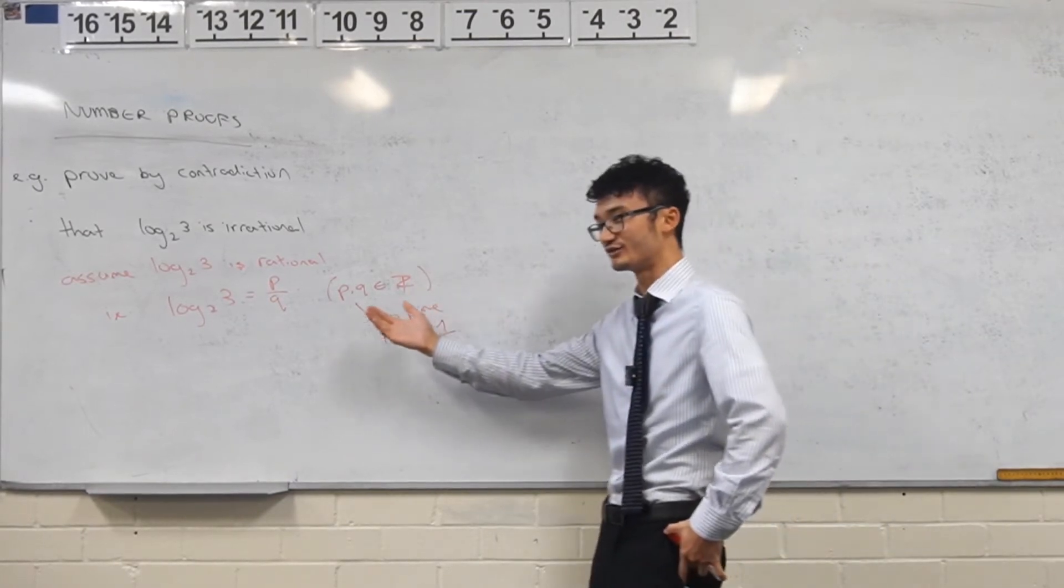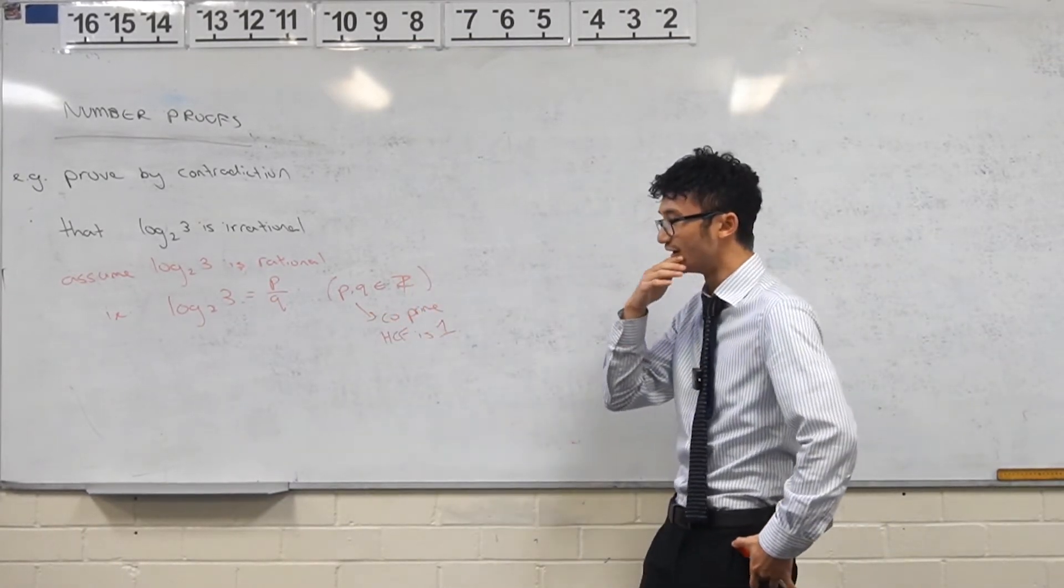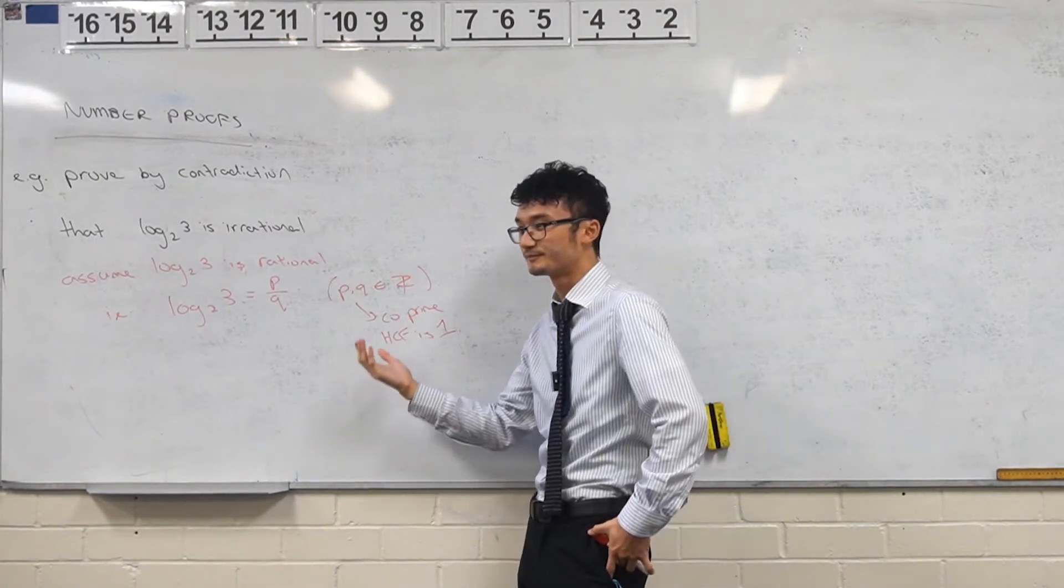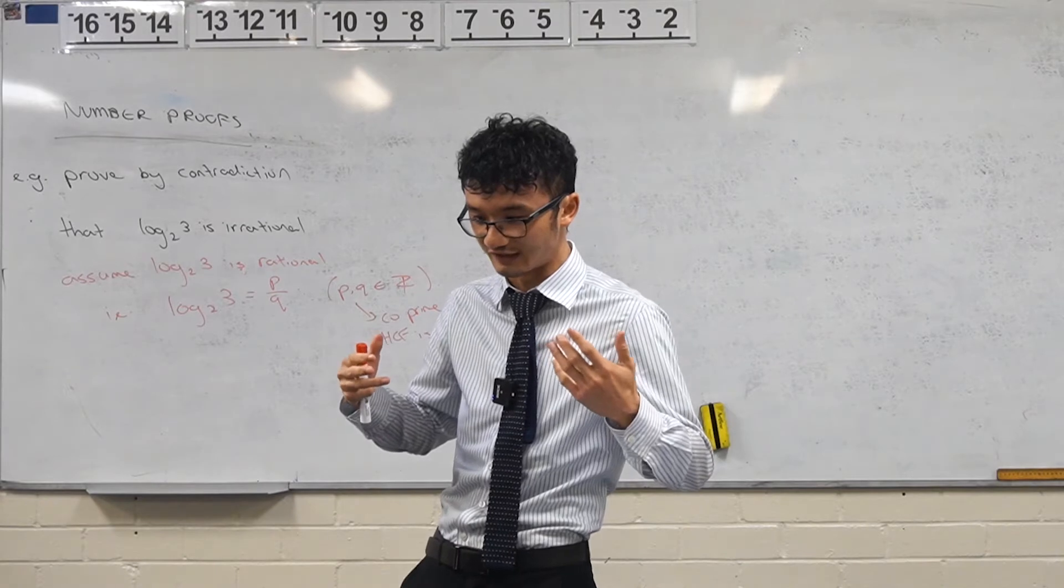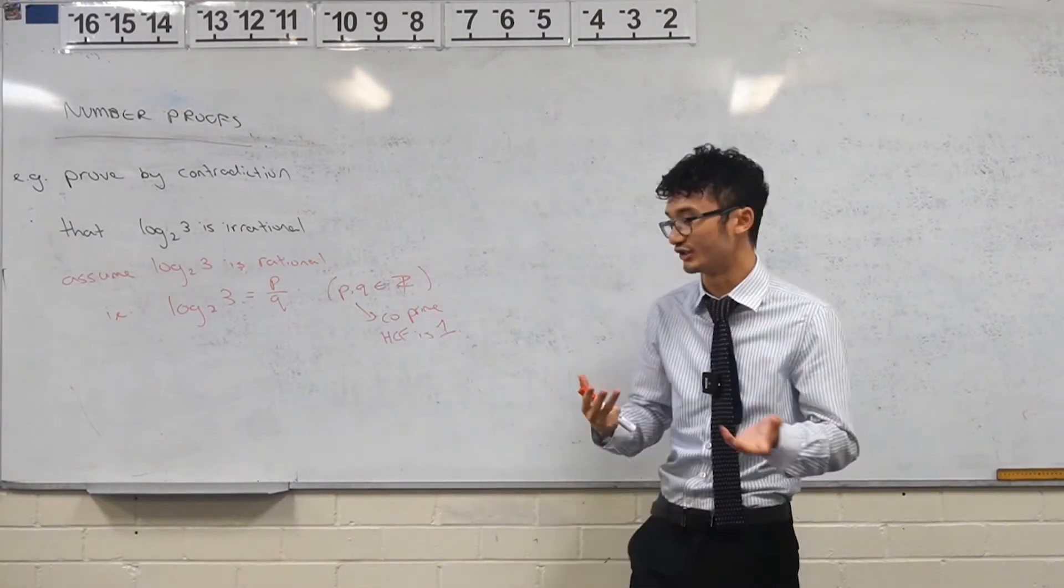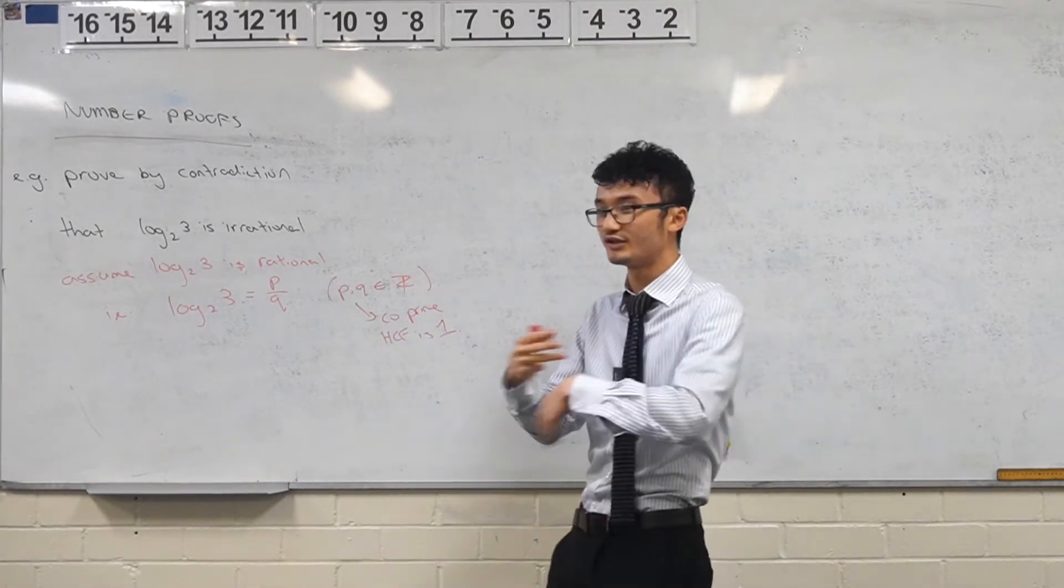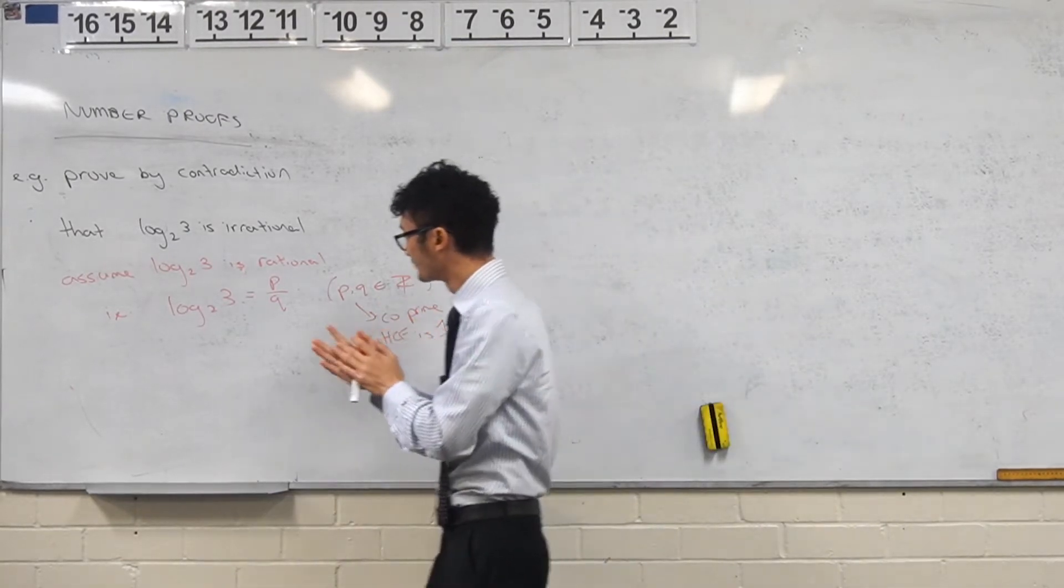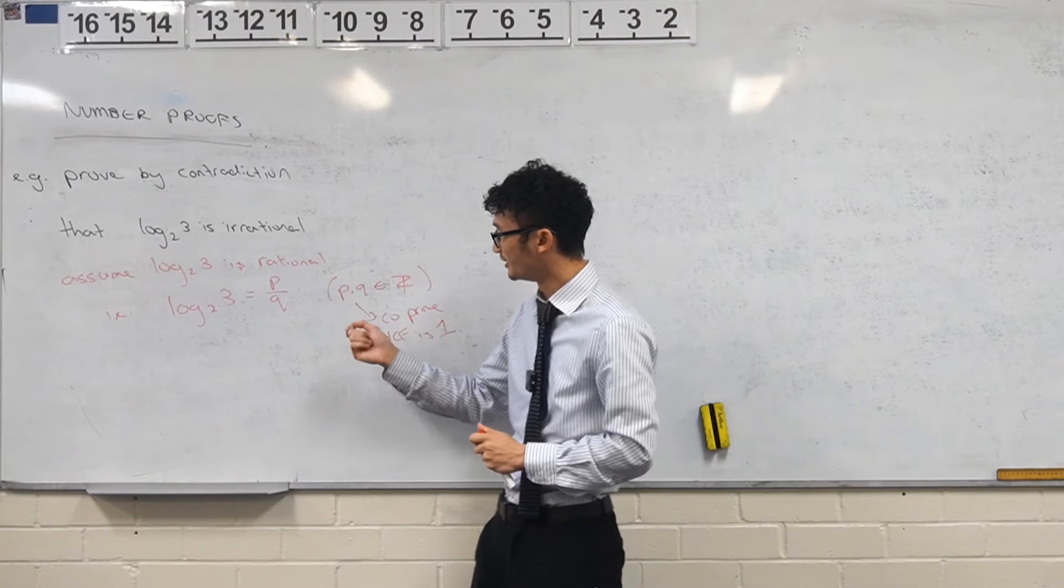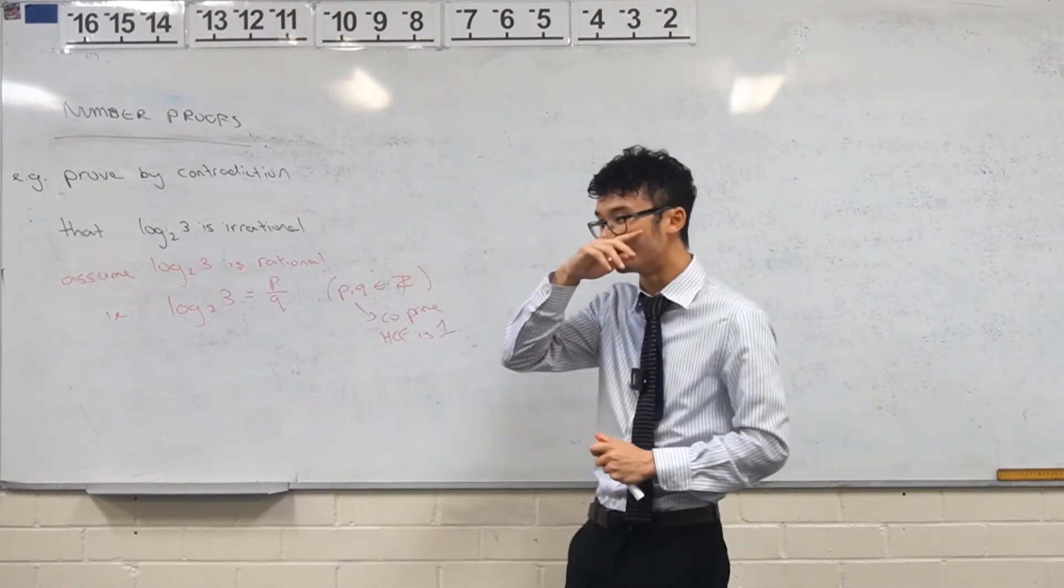Yeah, like we could square both sides, but I mean, that's not really going to help us. Right. So like the tricky thing with these proofs is that it's always going to be different depending on the question that you're going to get. So in this case, yeah, what can you do with logs? You can rearrange them in a particular way. What would this be in exponential form or whatever?